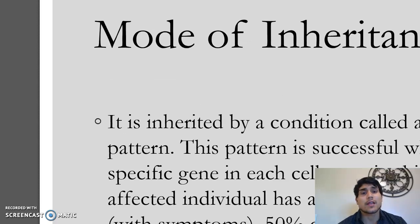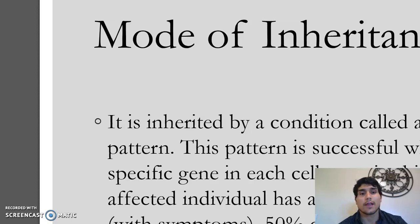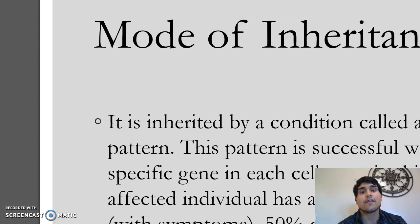The mode of inheritance is by a condition called autosomal recessive pattern. This pattern occurs when both copies of a specific gene in each cell contain the mutation — both alleles need to be lowercase 'a'. An affected individual has a 25% chance of being affected, a 50% chance of being a carrier showing no symptoms, and a 25% chance of being unaffected and not a carrier.